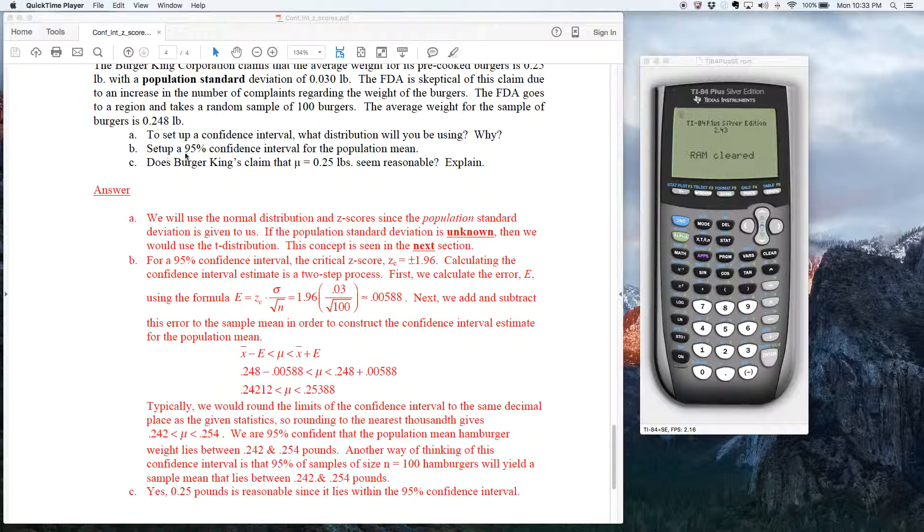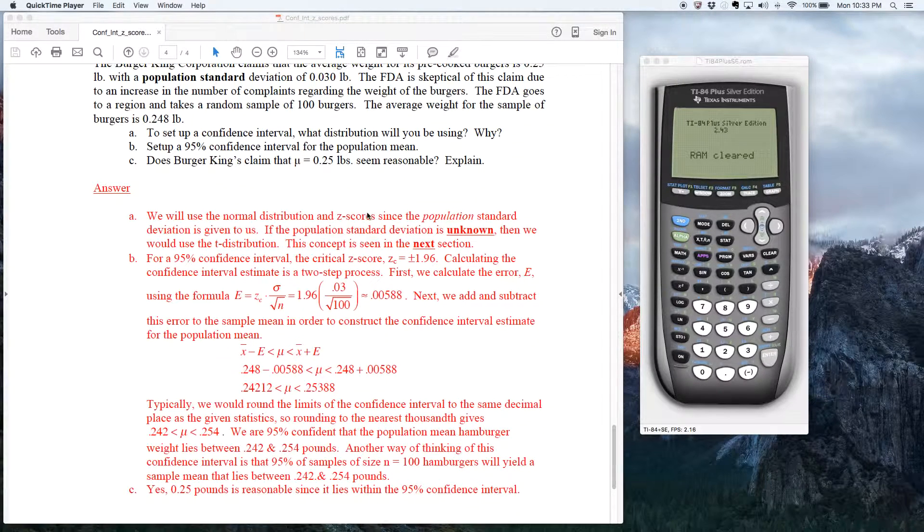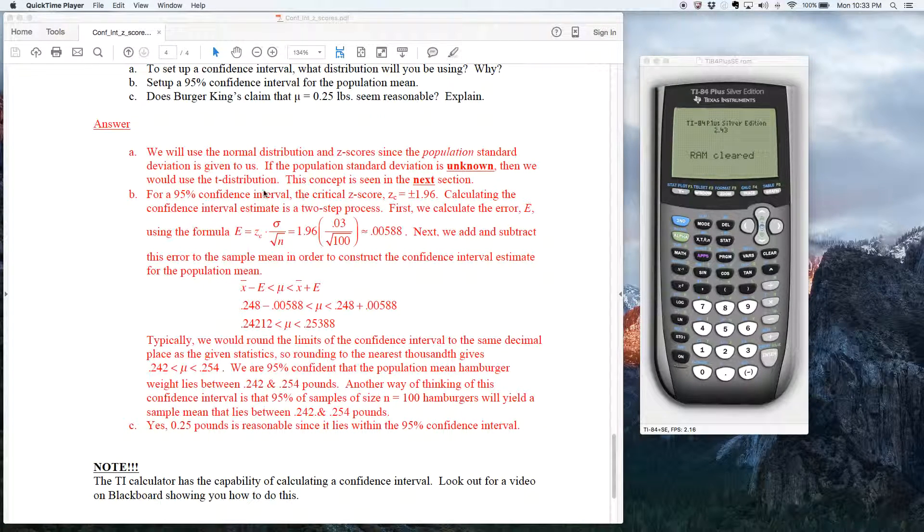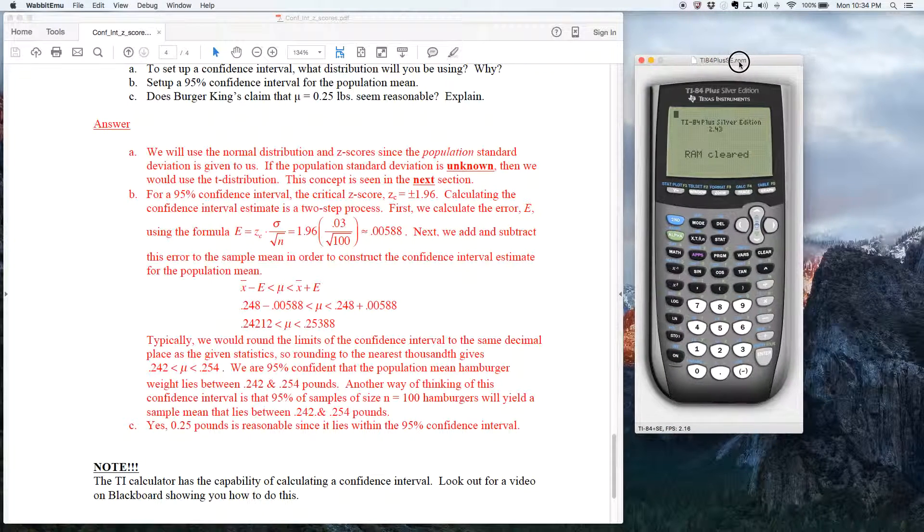So now it says calculate the 95% confidence interval. Hopefully you read through this big explanation here on how to first calculate the error, and then take the error and add it and subtract it to the x-bar to create this interval that surrounds the population mean. Really the point of this video is let's just show you how to calculate this confidence interval on your calculator. It's really fast. The calculator not only crunches the error, but it simultaneously adds and subtracts the error to the x-bar and gives you the answer for the confidence interval.